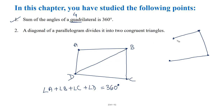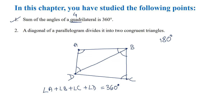From the angle sum property of a triangle, which we proved in the last chapter, the sum of all angles of a triangle is 180 degrees. So the angles of the first triangle sum to 180 degrees, and the second triangle also sums to 180 degrees. Therefore 180 plus 180 equals 360 degrees. So in any quadrilateral, the sum of all the angles is 360 degrees.